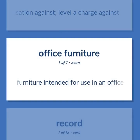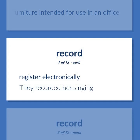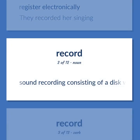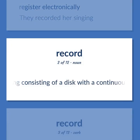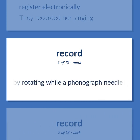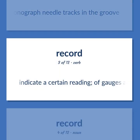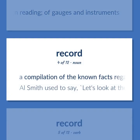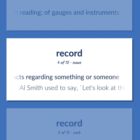Office furniture intended for use in an office. Record: register electronically. Example: they recorded her singing. A sound recording consisting of a disc with a continuous groove, used to reproduce music by rotating while a phonograph needle tracks in the groove. Indicate a certain reading of gauges and instruments. A compilation of the known facts regarding something or someone. Example: Al Smith used to say, let's look at the record.